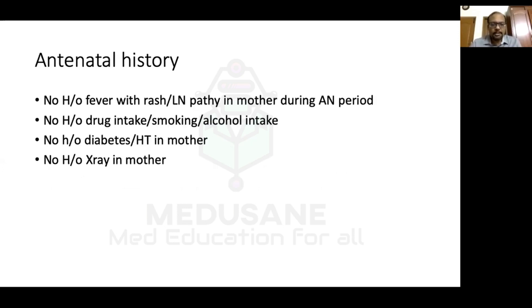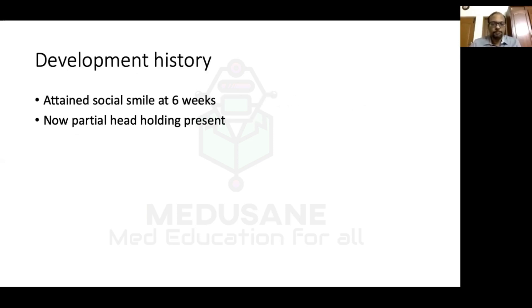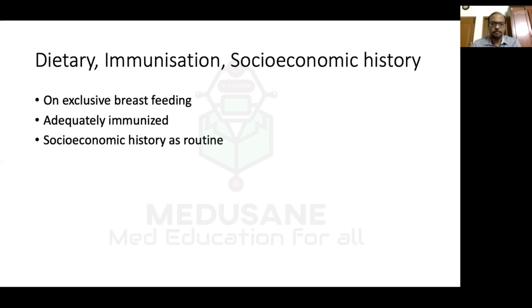Antenatal history: no history of fever with rash or lymphadenopathy in the mother, no drug intake, smoking, or alcohol, no diabetes or hypertension, and no X-rays taken during pregnancy. The baby was born by full-term normal vaginal delivery, weight three kilos, cried immediately after birth, with a three-day NICU stay without complications and no prolonged jaundice, petechiae, or seizures in the newborn period. The baby attained social smile at six weeks but has only partial head holding at five months. Baby was on exclusive breastfeeding and adequately immunized.